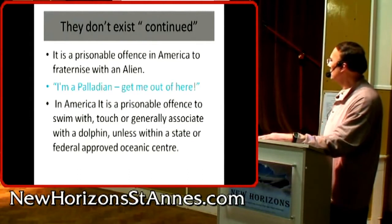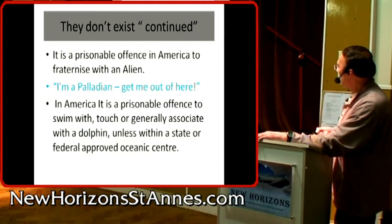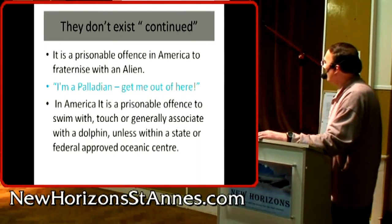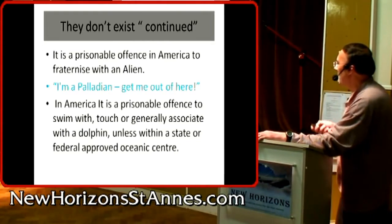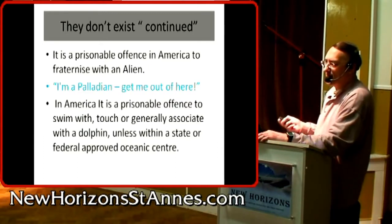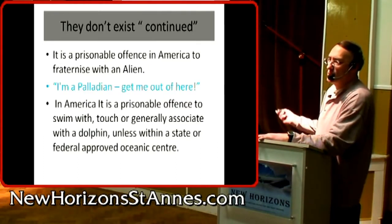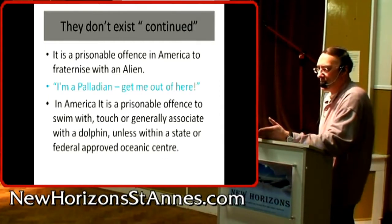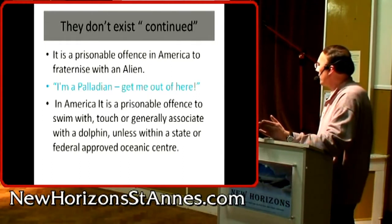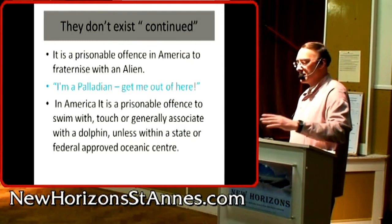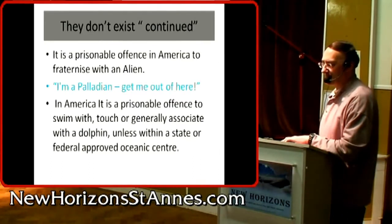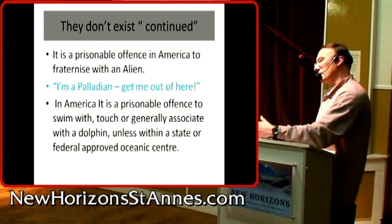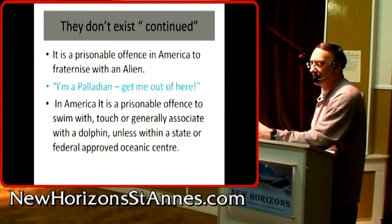It's actually a prisonable offense in America to fraternize with an alien — although of course aliens don't exist, officially. It's also a prisonable offense in America to fraternize or touch a dolphin unless it's within a state or federal approved oceanic center. When you question that, they say it's about preserving and protecting them. But you can go and buy a gun and shoot a moose. The people in power know the very special nature of dolphins.